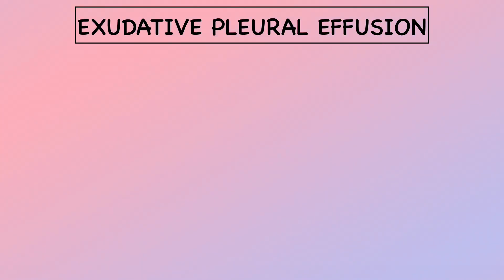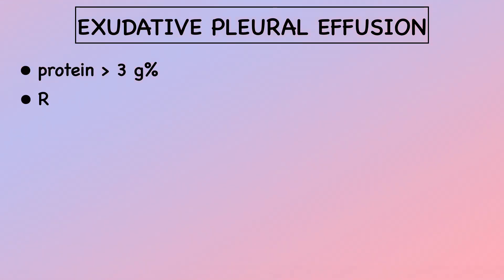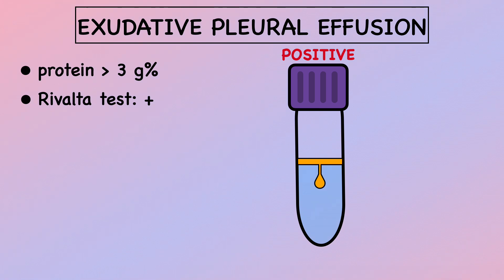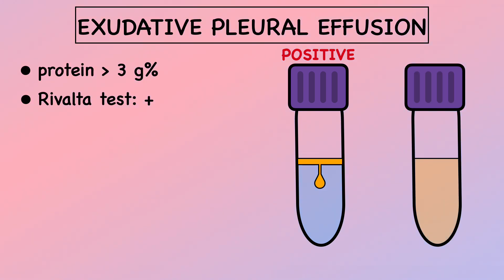Characteristics of exudative pleural effusion include high protein concentration greater than 3 g%, and a positive Rivalta test, which is used to estimate the concentration of protein in body fluids. A drop of the effusion is added over a mixture of distilled water and acetic acid. If the drop precipitates, the test is positive, indicating an exudate. If the drop dissipates, the test is negative, indicating a transudate.